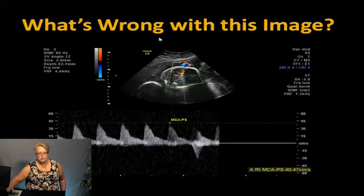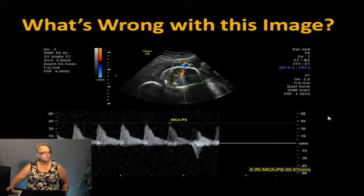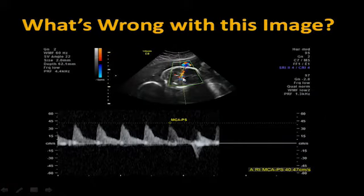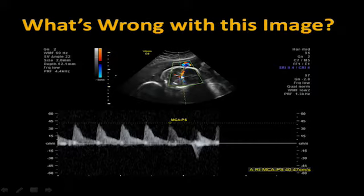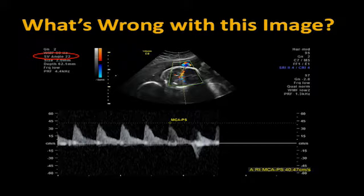Looking at a cross-section of the baby's head, trying to evaluate the mid-cerebral artery — what's wrong with this image? The image is too small, so change depth, sector width, and magnification to just the head. Looking at the angle: 22 degrees with angle correction — should we ever be more than 10 degrees on angle correction for MCA? No. Garbage in, garbage out. If you're not using proper image optimization, you're not going to get good information back.